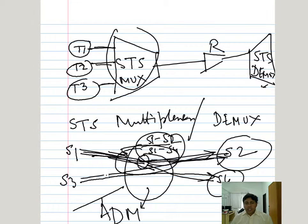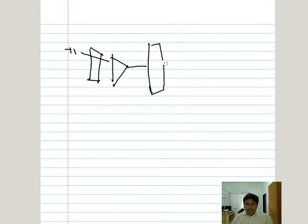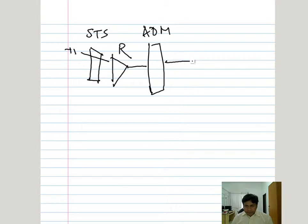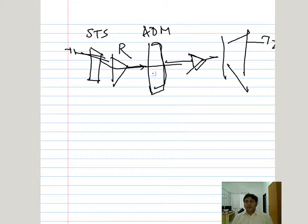Signals initially come to the multiplexer, then come to the regenerator, then to the ADM. So the path is: STS multiplexer/demultiplexer, then regenerator, then ADM, then regenerator again, and finally demultiplex to the terminal. T1 signals will be multiplexed, come through the regenerator, come to ADM, and accordingly the ADM will add or drop signals according to the path.